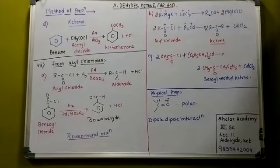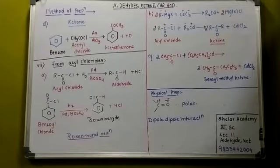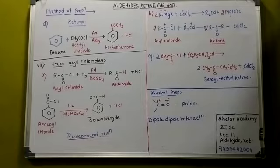You get acetophenone. Friedel-Crafts, so the reaction takes place in the presence of anhydrous AlCl3, anhydrous aluminium chloride, and the product is acetophenone. Now, the next method we go for is from acyl chlorides. The name of the reaction is Rosenmund reaction. We have written the general reaction for the same.